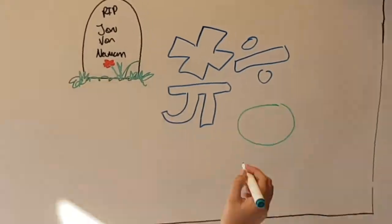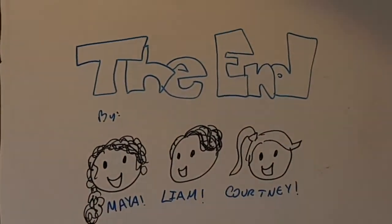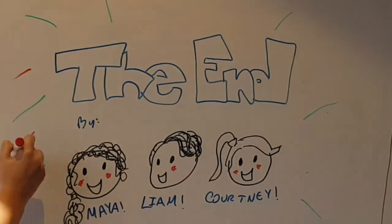Despite his many accomplishments, Neumann unfortunately died at the age of 53 due to bone cancer in Washington, D.C. His legacy lives on in mathematics to this day.